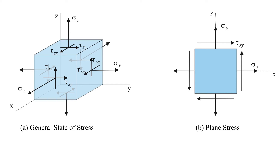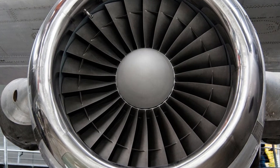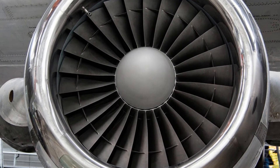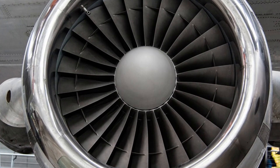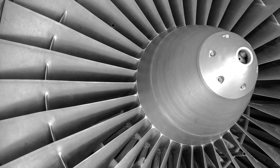In engineering practice, it is frequently required to determine the state of stresses in different planes with different orientations. Also, it is critically important to find the magnitude and direction of the maximum normal and maximum shear stresses at a point and the orientation of the element upon which they act. For example, these turbine blades are subjected to a complex pattern of stress. In order to properly design them, it is necessary to calculate the location, magnitude, and direction of maximum normal and shear stresses.